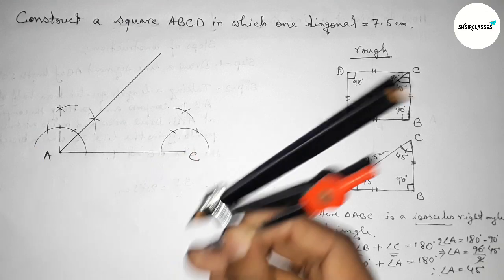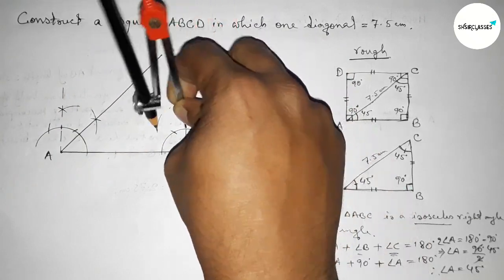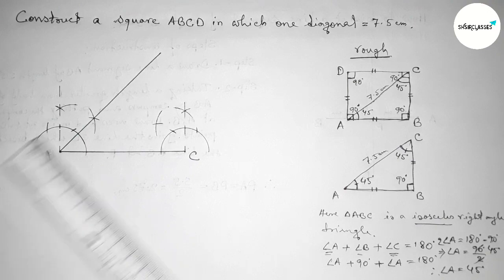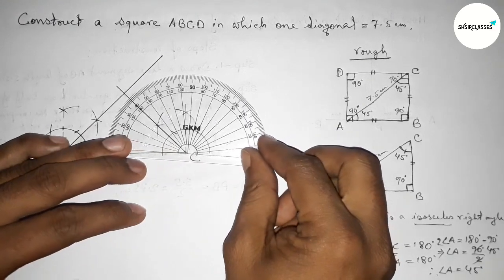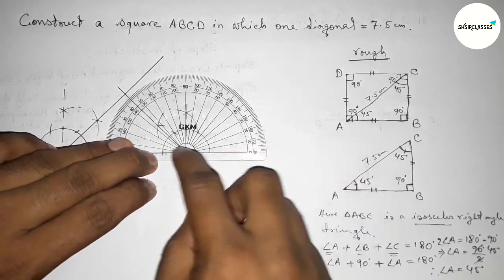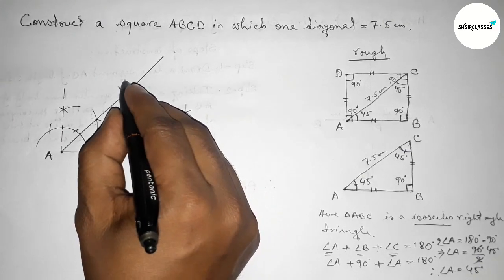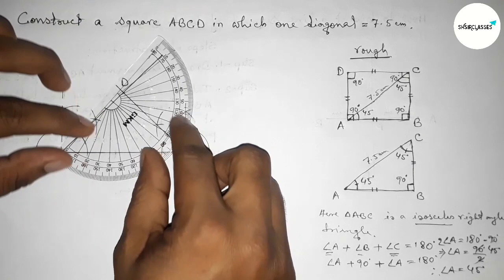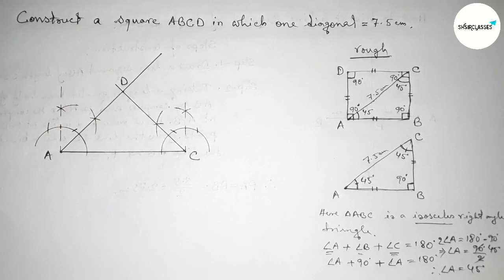Similarly, bisecting this angle at C: putting the compass at the arc intersections, taking greater than half, drawing arcs, and joining the line to get a 45-degree angle. Both lines from A and C meet at a point. Checking angle ADC with the protractor — it is perfectly 90 degrees.